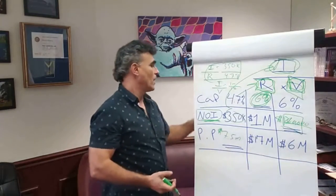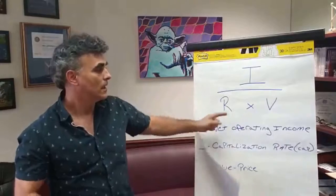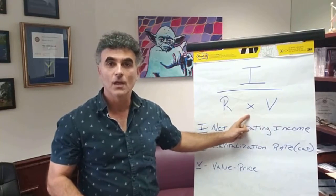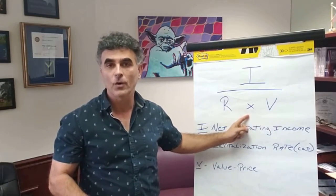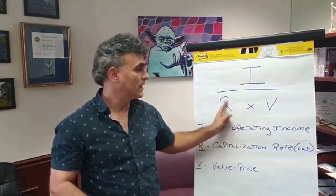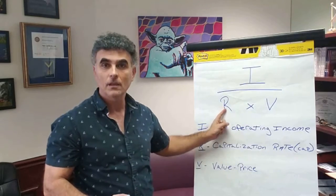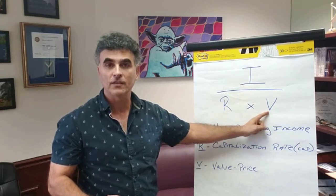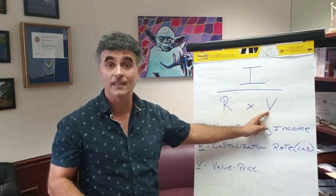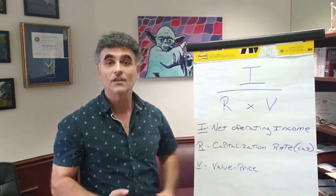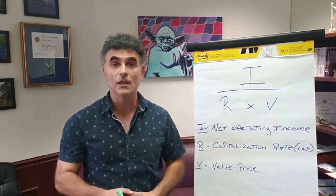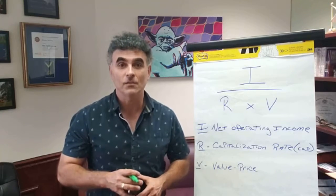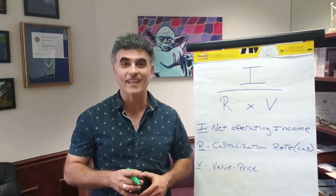So this I over R times V is what we're going to live by when we are looking at numbers. Because usually when brokers send us packages, they'll send us a cap rate and an NOI, and they'll say, 'You figure out what the purchase price is — we're going to leave it to the market to dictate the purchase price.' So this is Nitsan Mosery, your Traveling Investor. If you like what you see here, click like and subscribe to the YouTube channel. Take care, thank you.